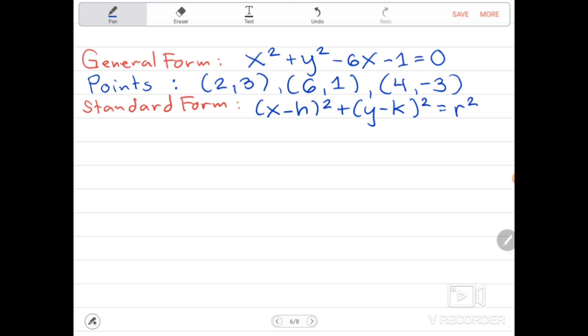So let's work out the general form. We will be having x squared minus 6x plus y squared equals 1. So for x, we are going to apply completing the square. For y, no need.